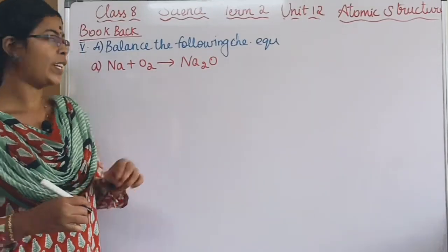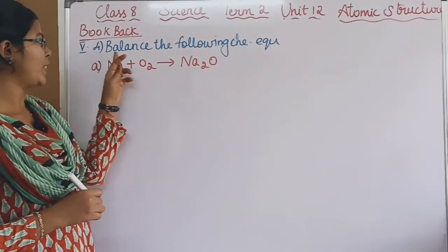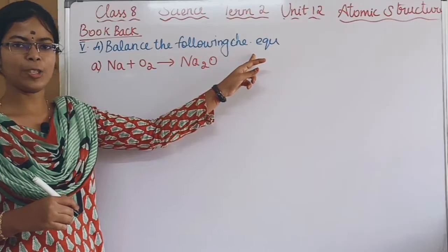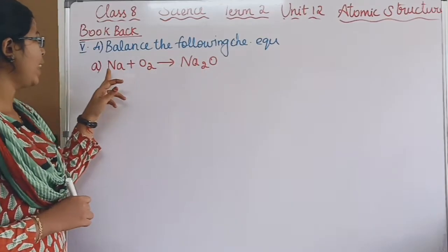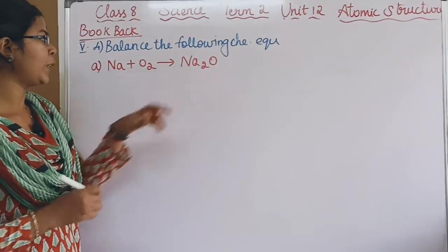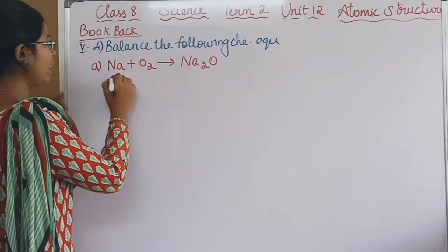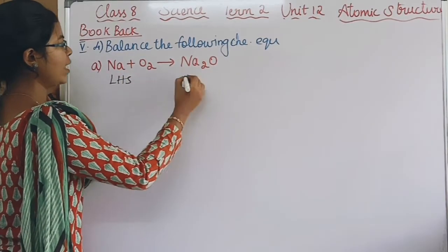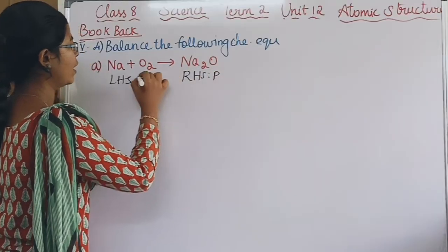If you have question 4 in your book, it asks you to balance the following chemical equations. The first one is Na plus O2 gives Na2O. The left-hand side is the reactant and the right-hand side is the product.